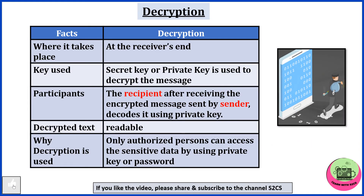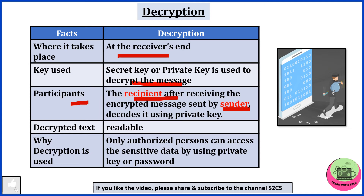Next is decryption. Where does it take place? At the receiver's end. Secret key or private key is used to decrypt the message. The participants are the recipient and sender. After receiving the encrypted message, the recipient decodes it using the private key. The decrypted text is readable. Why is decryption used? So that only authorized persons can access the sensitive data by using a private key or password.